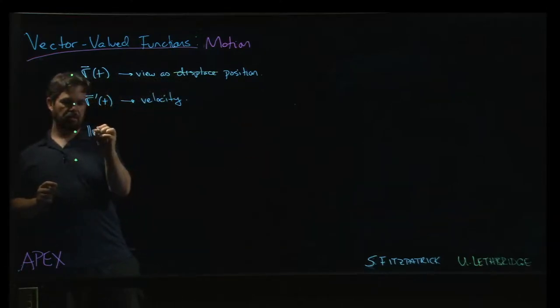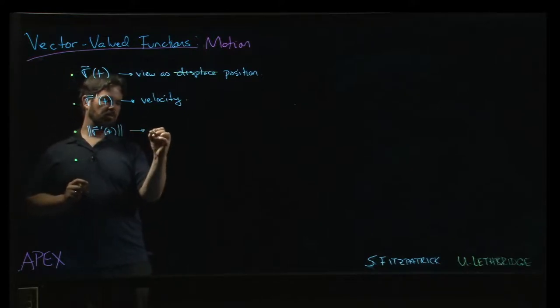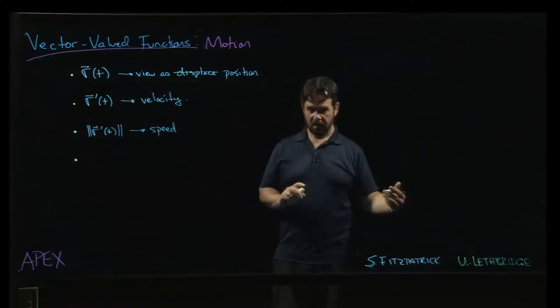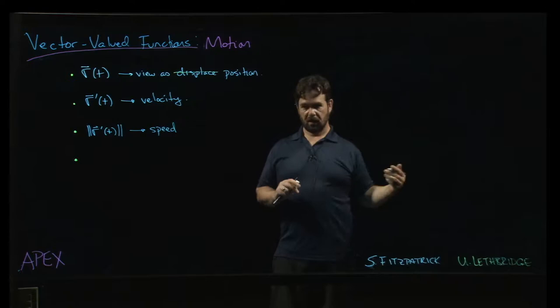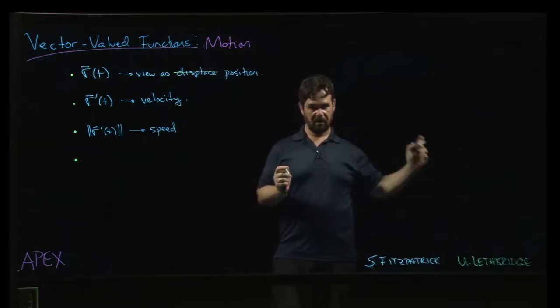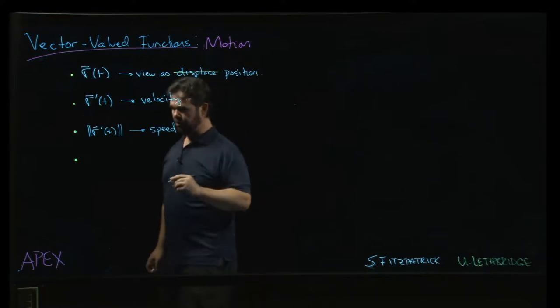The magnitude is what we would normally refer to as speed. So speed is a scalar quantity—how fast you're going. The velocity also tells you the direction that you're going in. How fast and which way. We get both of those pieces of information.